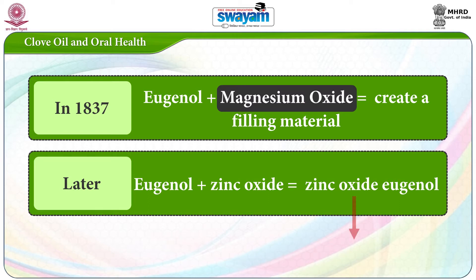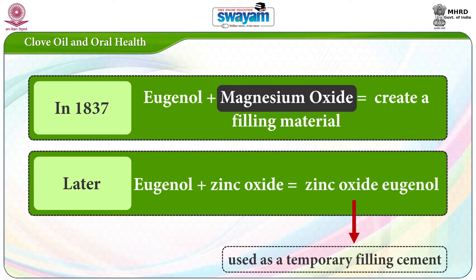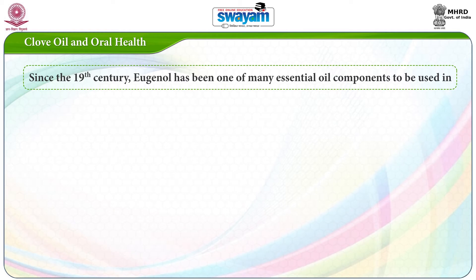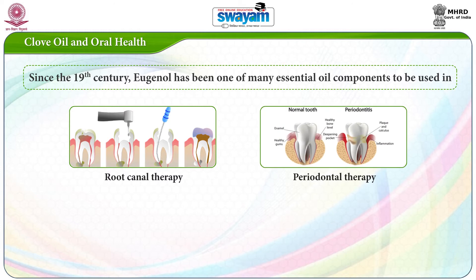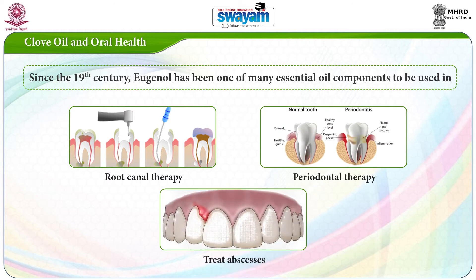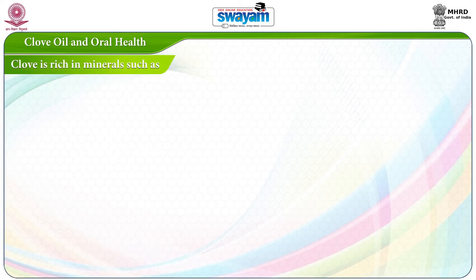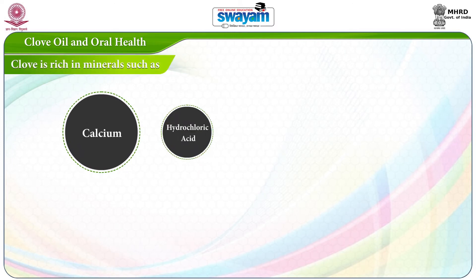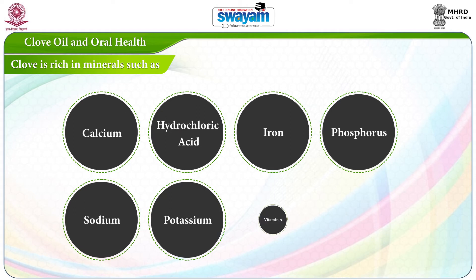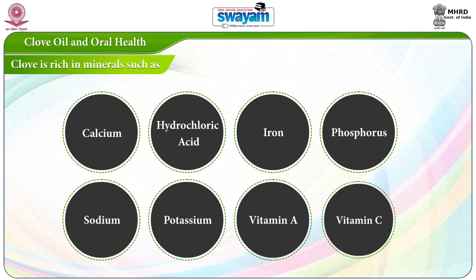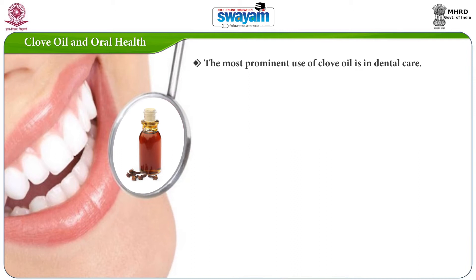Zinc oxide eugenol (ZOE) is still widely used as a temporary filling cement. Since the 19th century, eugenol has been one of the many essential oil components used in root canal therapy, periodontal therapy, and to treat abscesses. Clove is rich in minerals such as calcium, hydrochloric acid, iron, phosphorus, sodium, potassium, and vitamins A and C.